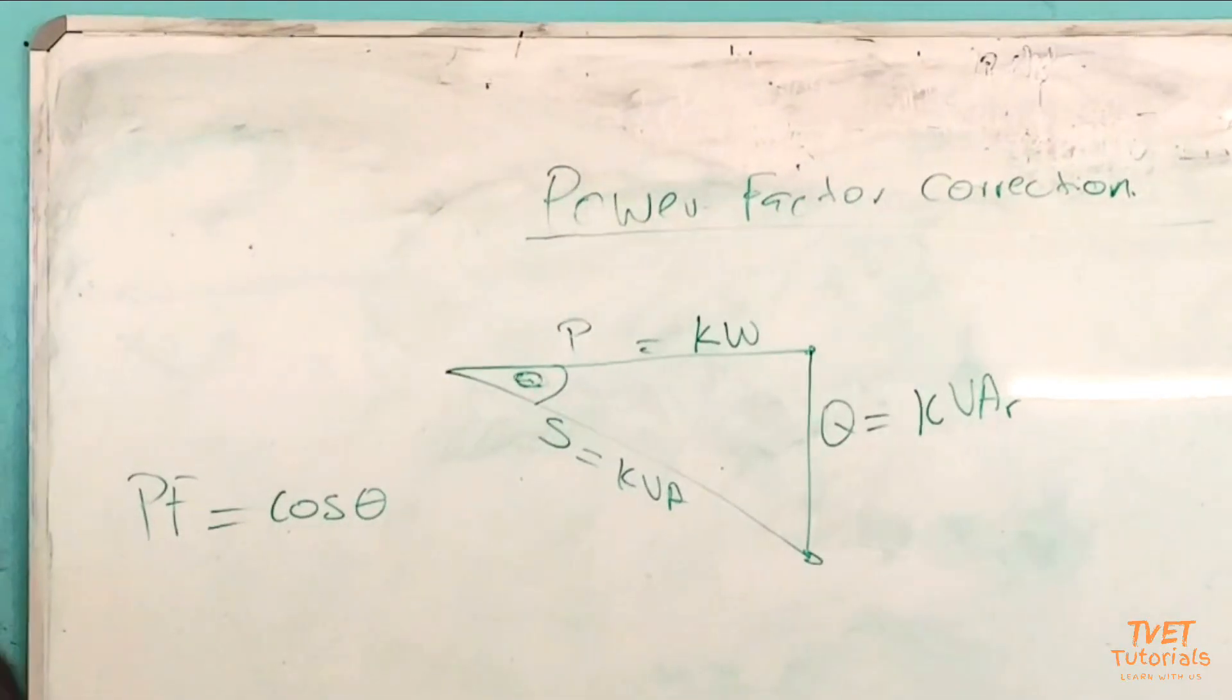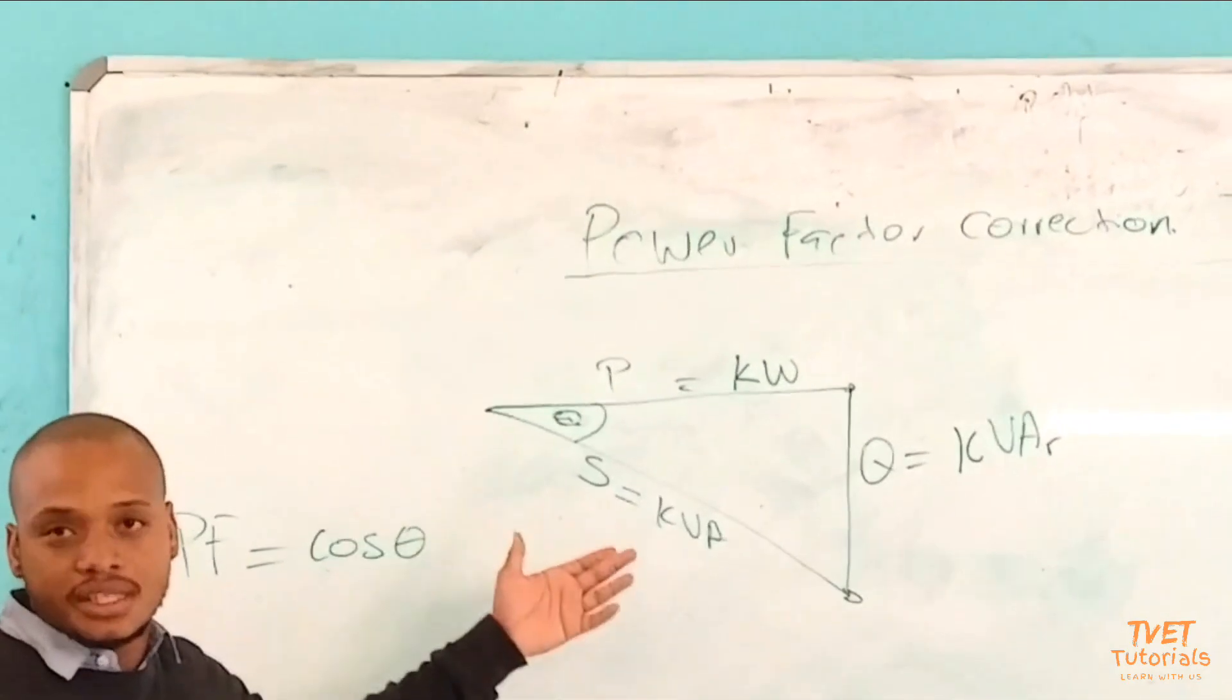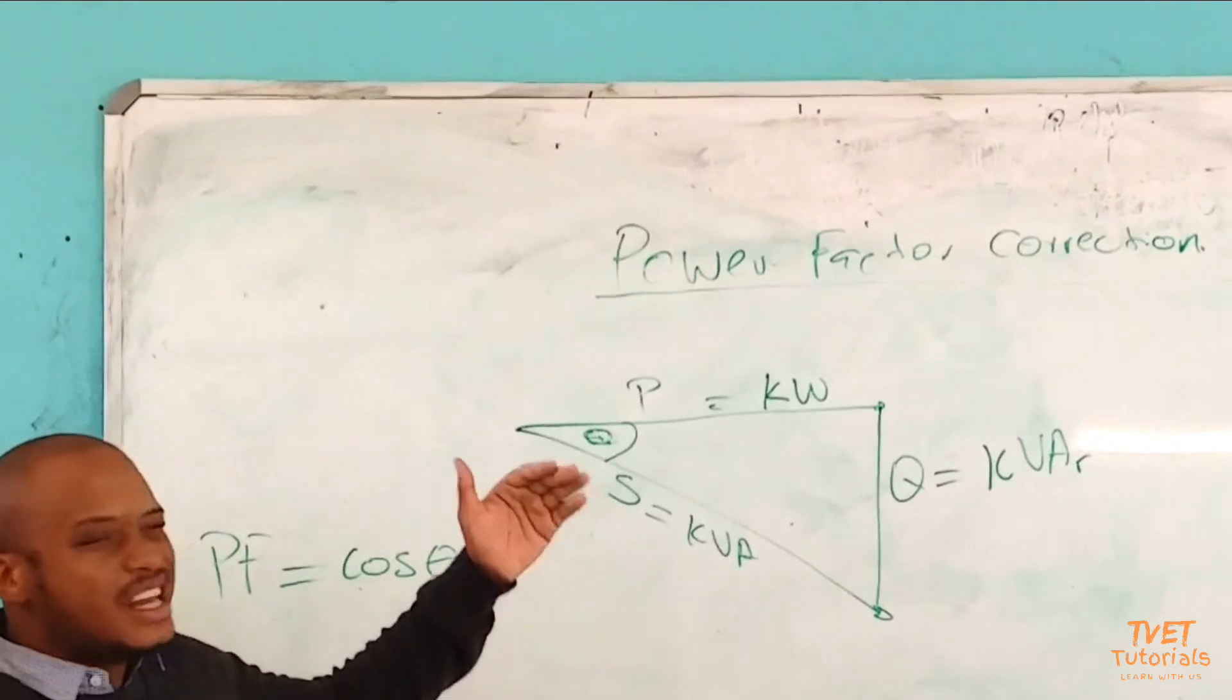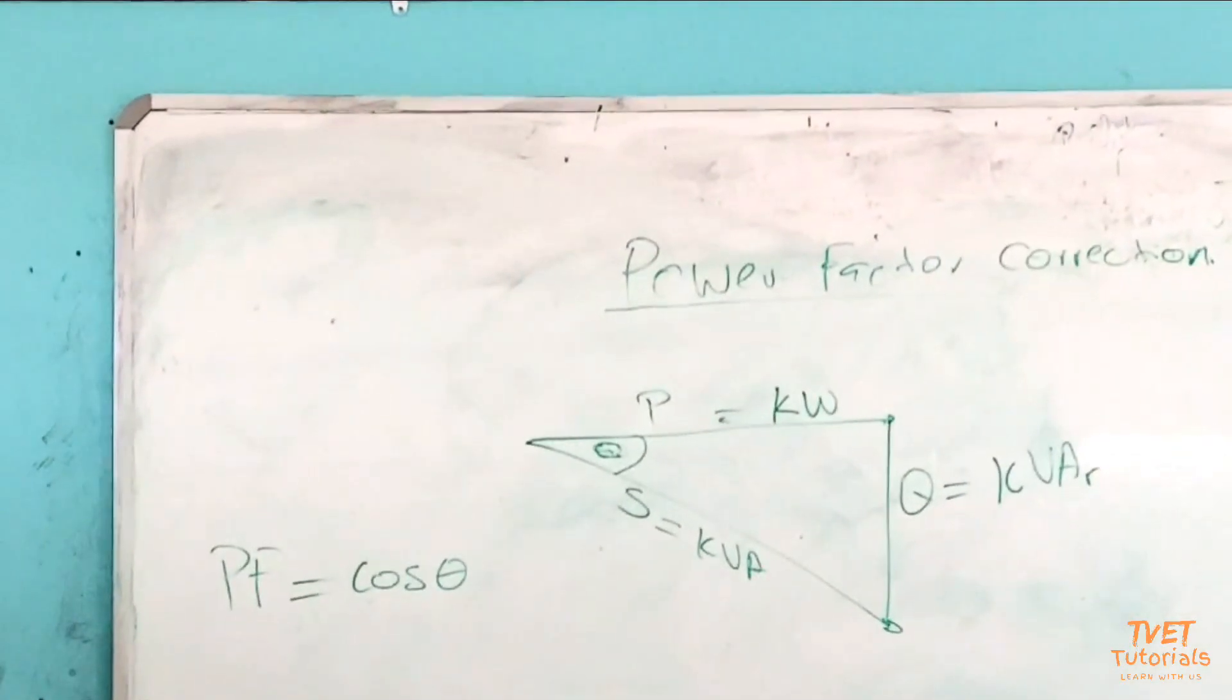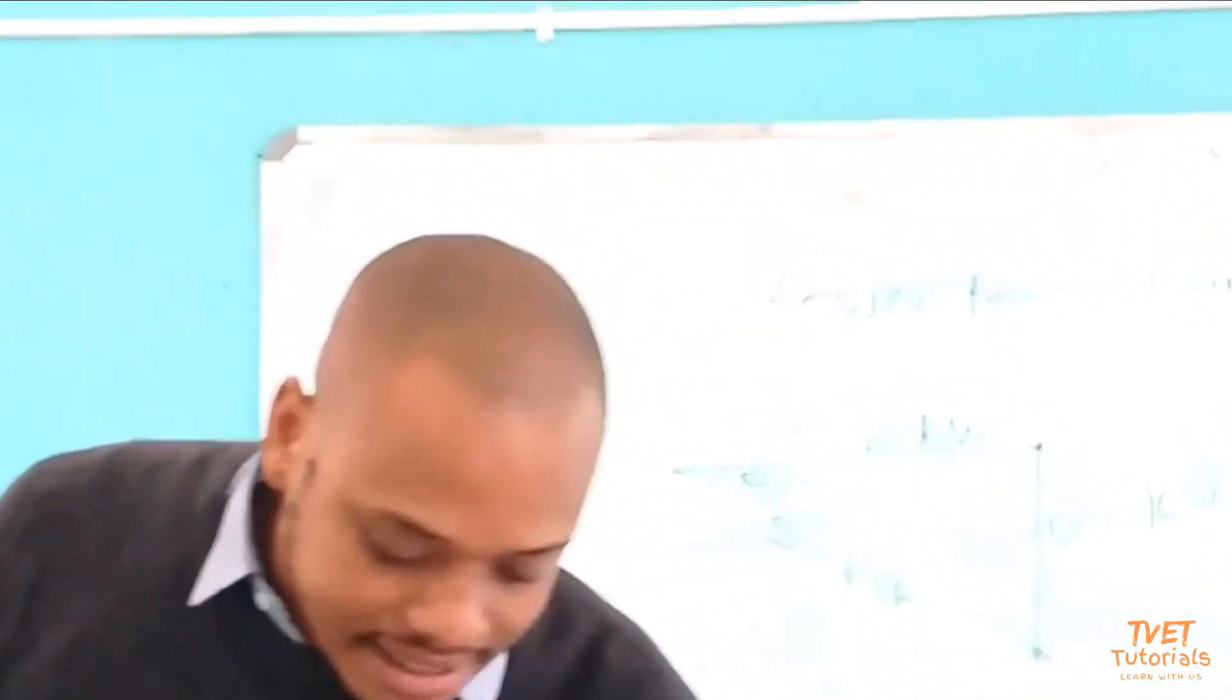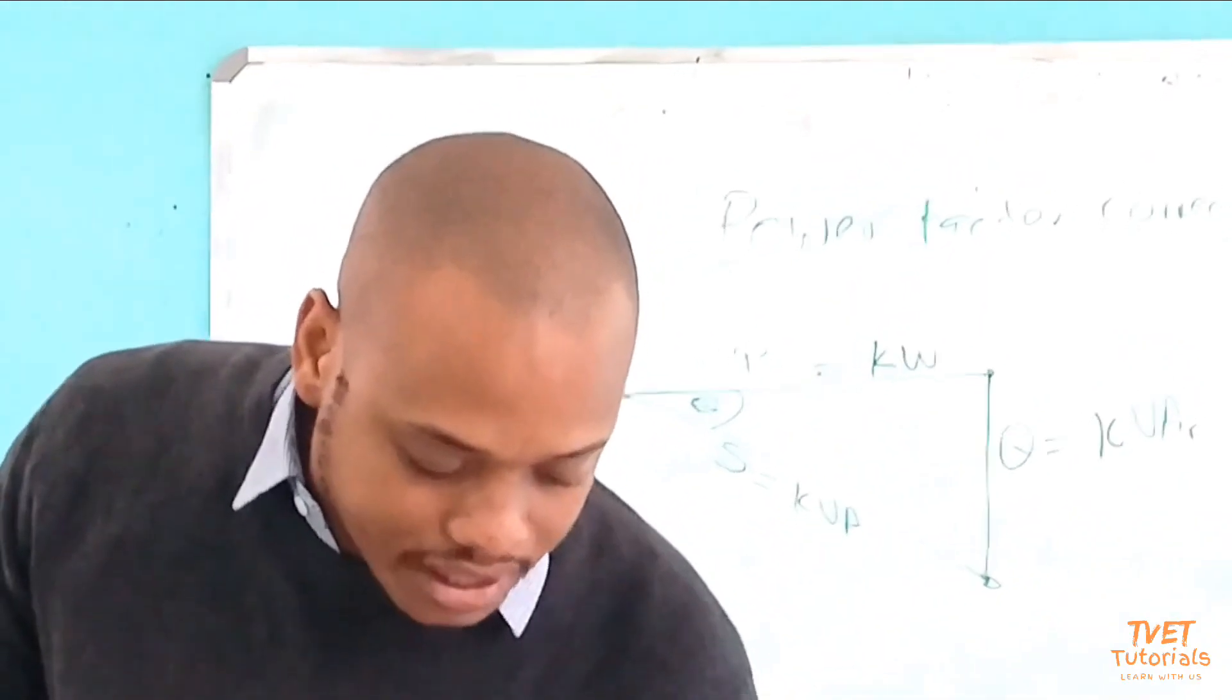If you look at this, we say if a good power factor is one, then we will have a perfect power factor. But if we have anything less than one, anything between zero and one will give you a bad power factor, and we want to try to improve that.